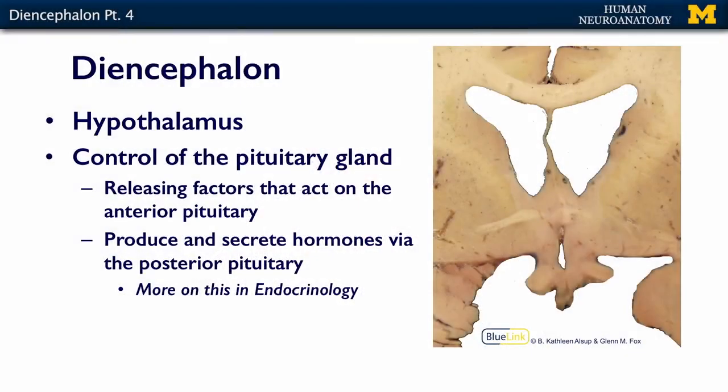The hypothalamus controls the pituitary gland — both the anterior and the posterior pituitary gland. It's a region of the brain that we call neuroendocrine, because it's neurons and it's hormones. We'll talk a lot more about the hormonal aspects of the pituitary gland and the hypothalamus in the endocrinology series of lectures, but what I want you to know for this neuro part is that it secretes factors —